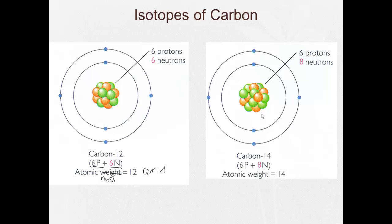Carbon-14, in this case, has six protons and eight neutrons. We add them up, we get an atomic mass of 14 AMU.